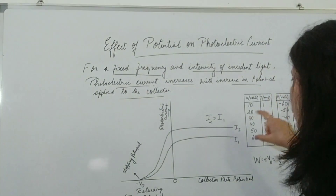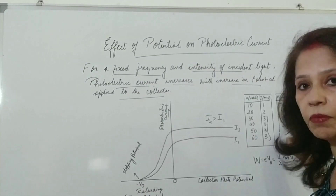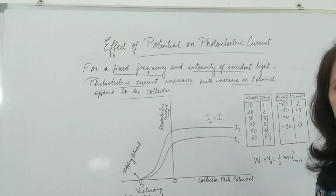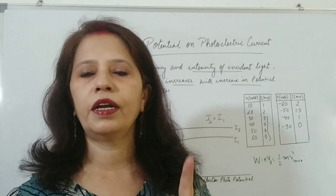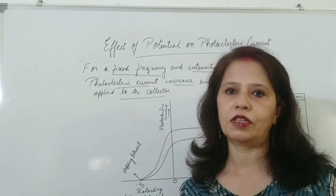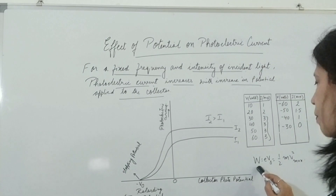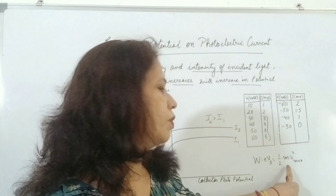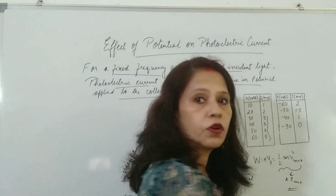On giving negative potential, the current starts decreasing: at minus 60, 2 amperes; minus 50, 1.5; minus 40, 1; minus 30, 0. At a certain negative potential, the current becomes 0. The negative potential or retarding potential at which the current becomes 0 is called the stopping potential or cutoff potential. This is very important for numerical problems. The energy of electrons at the stopping potential is maximum, given by W = eV₀, where V₀ is the stopping potential, equal to ½mv²_max — the maximum kinetic energy of the emitted electrons.